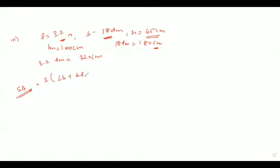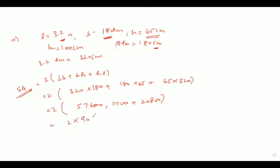LB plus BH plus HL. So 2 into 320 into 180 plus 180 into 65 plus 65 into 320. So here it would be coming as 57600, 11700, plus 20800. So it would be coming as 2 into 90100. So answer would be coming as 180,200 cm or 18.02 meters. So this is our answer. Now a full glance of third part of question number 1.